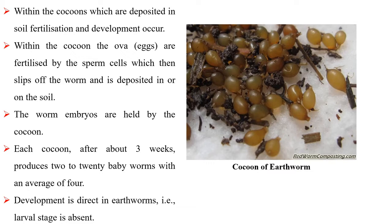The worm embryos are held by the cocoon. Each cocoon after about 3 weeks produces 2 to 20 baby worms with an average of 4. Development is direct in earthworm, that is, larval stages are absent.